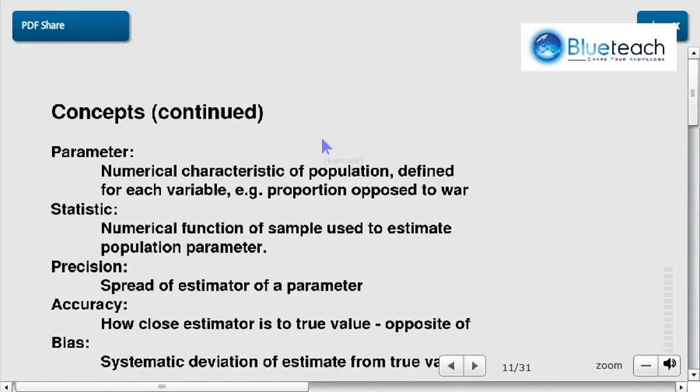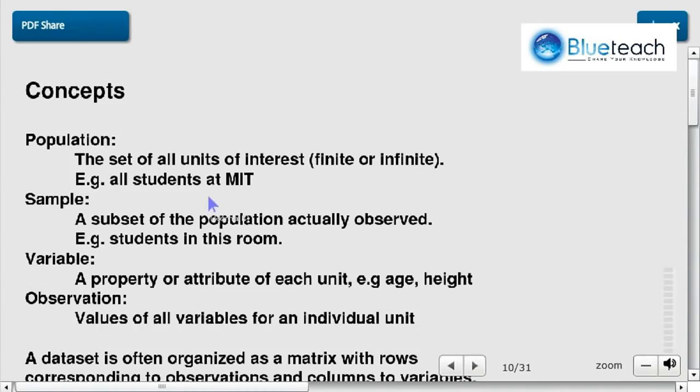In the previous video, we've introduced some key concepts and vocabulary. We've seen what a population is, that we're observing a sample, and that on the sample we're observing variables. These variables can be either character or numeric, and for every unit of the sample we are making an observation.